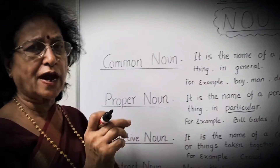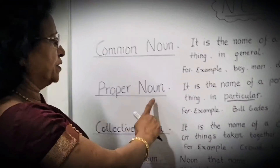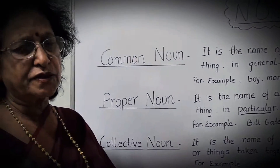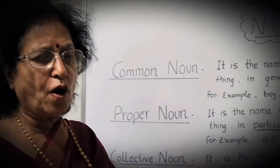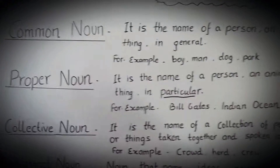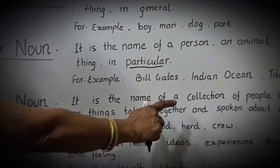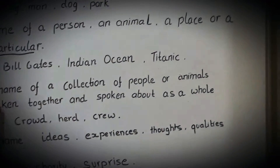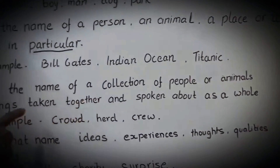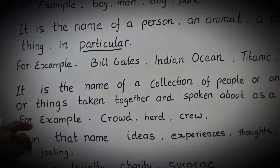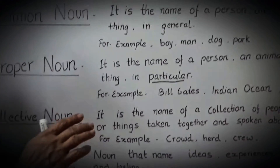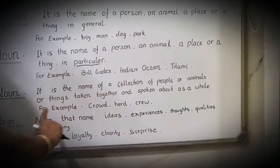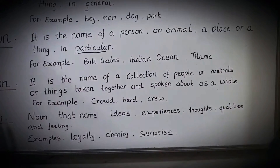Any confusion? Very easily you can distinguish between common and proper noun. If it starts with a capital letter, that is a proper noun. Then comes collective noun. As the name suggests, collective means a group of something — a collection of something. So collective noun is the name of a collection of people, animals, or things taken together and spoken about as a whole. For example: crowd, herd, crew — they are all examples of collective noun.